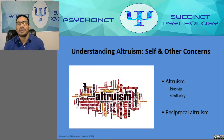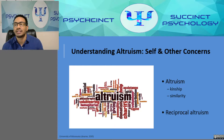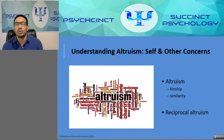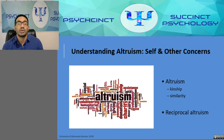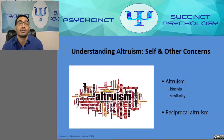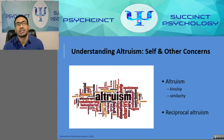Altruism refers to any behavior designed to increase another person's welfare, particularly actions that don't seem to provide a direct reward for the person performing them. It occurs when we help disaster victims, stop to help a stranger on the highway, volunteer at a homeless shelter, donate to charity, or intervene to prevent a crime. Some of these represent true altruism, whereas others are more motivated by self-concern.